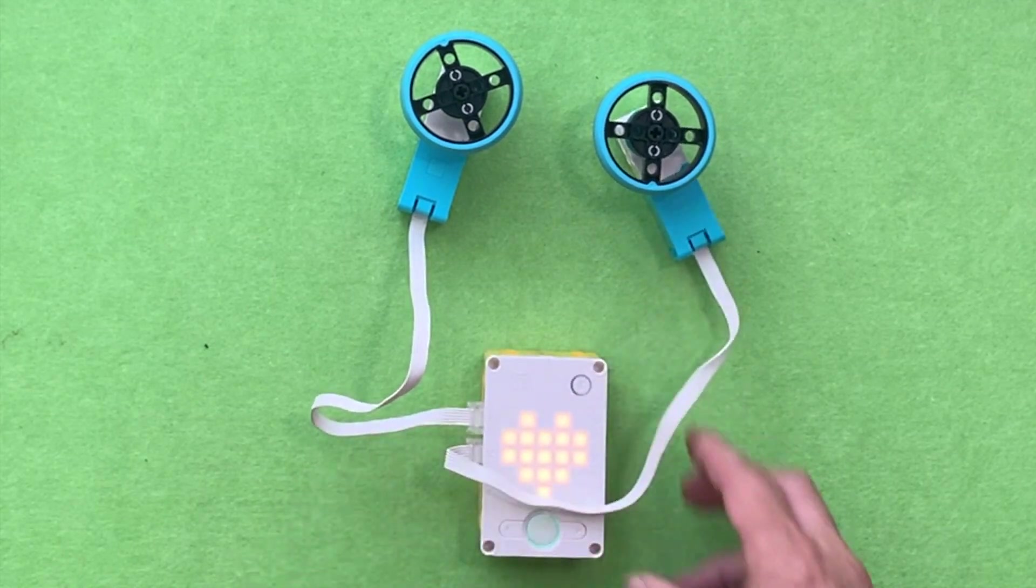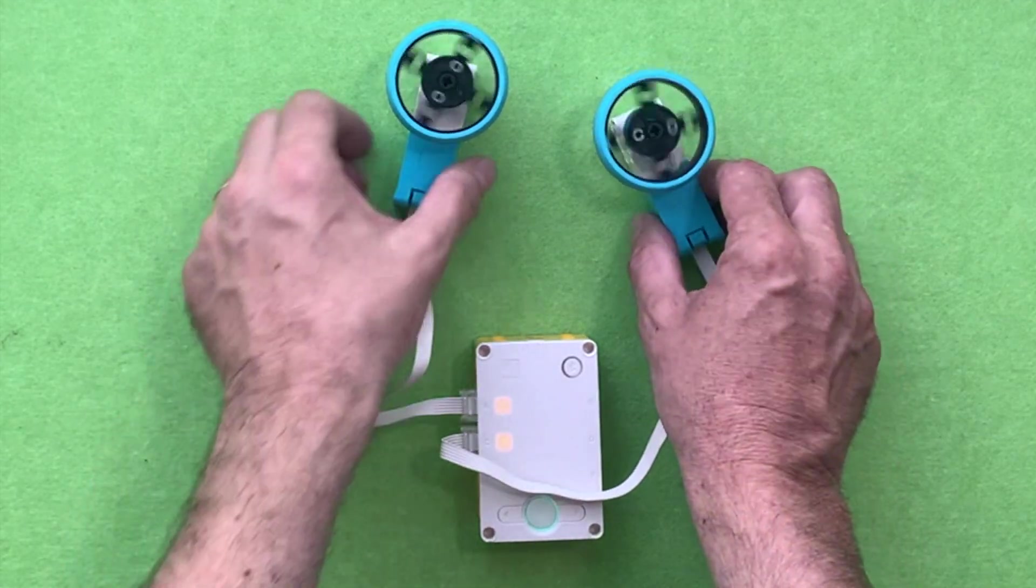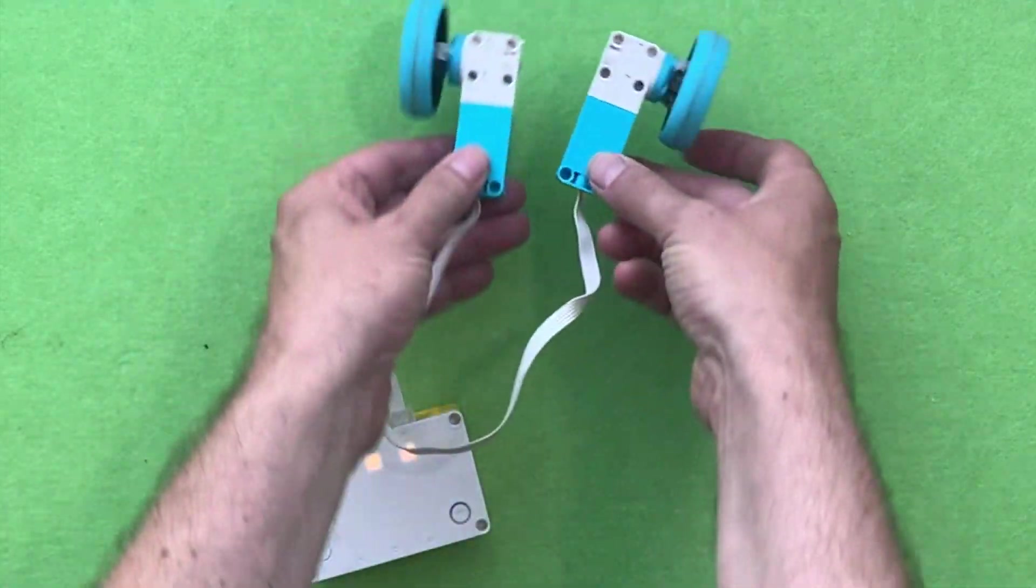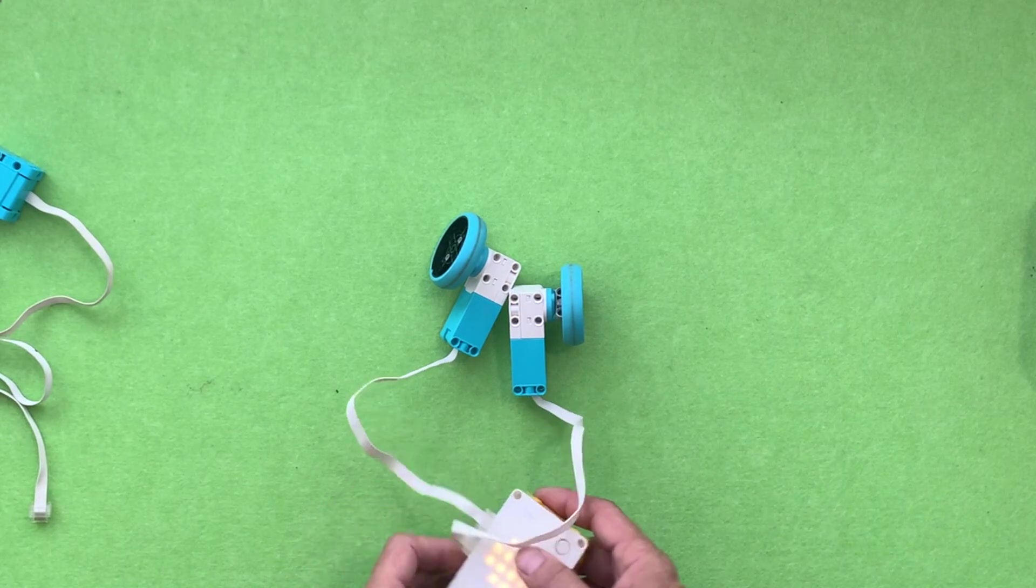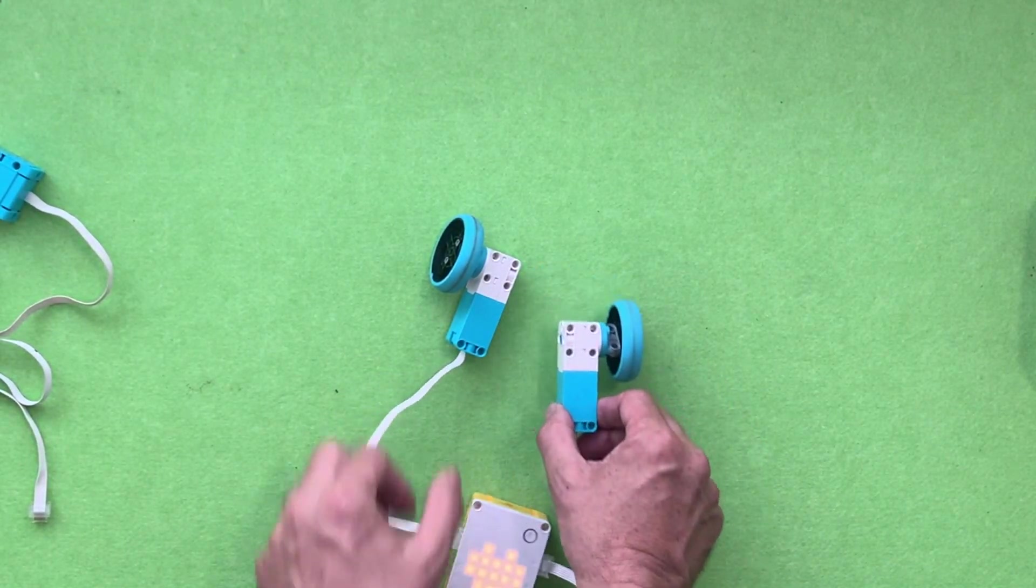If you put the motors plugged into the same side, for example in port A and C, you'll see that the motors actually spin in the same direction. And if it was on a car, the car would actually spin in circles. Sometimes you might want something to spin in circles, so you put the motors on the same side.